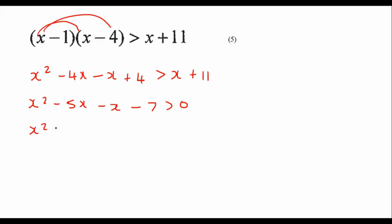And then that's going to give us x squared minus 6x minus 7 bigger than 0. Then you can factorize.